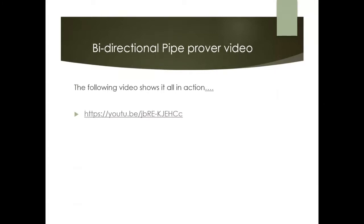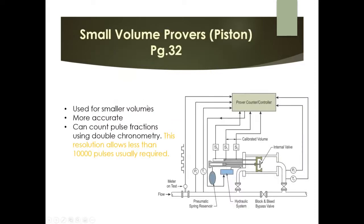That video covered the key points about bi-directional pipe provers effectively. Moving on to the small volume piston prover: these are used for smaller volumes. They are more accurate and have the benefit of counting pulse fractions using double chronometry — a term worth familiarizing yourself with.